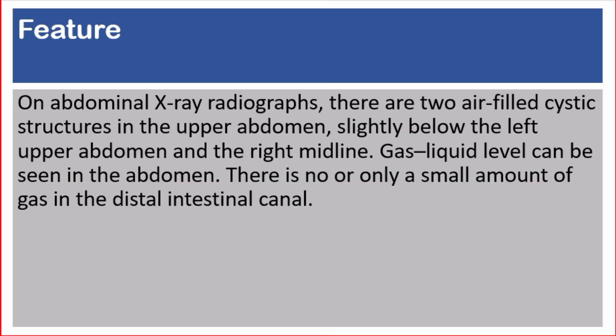Featured on abdominal X-ray radiographs, there are two air-fluid cystic structures in the upper abdomen, slightly below the left upper abdomen and the right midline. Gas-liquid levels can be seen in the abdomen. There is no or only a small amount of gas in the distal intestinal canal.